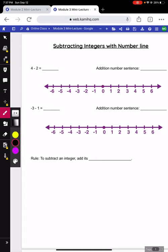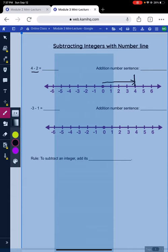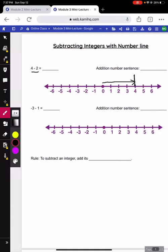So again, we're always going to start at 0. So for this first one I have 4 minus 2. The first thing you want to do is draw a line to that first number 4. Now we're taking away 2, so we need to go back to the left 2. And we see our answer is a positive 2.